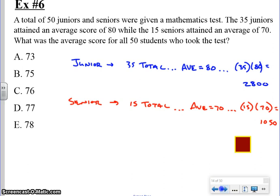If I know in terms of the overall sum, if I were to take the 2,800, which was the sum for my juniors, and add that to the 1,050, which is the sum for my seniors, and divide that by however many total students we had, 35 plus 15 or 50, this should give us the average. So when we take 2,800 plus 1,050, that's going to give us 3,850, divide that by 50, and now we can expect to get an average of 77, which is D for our final answer.